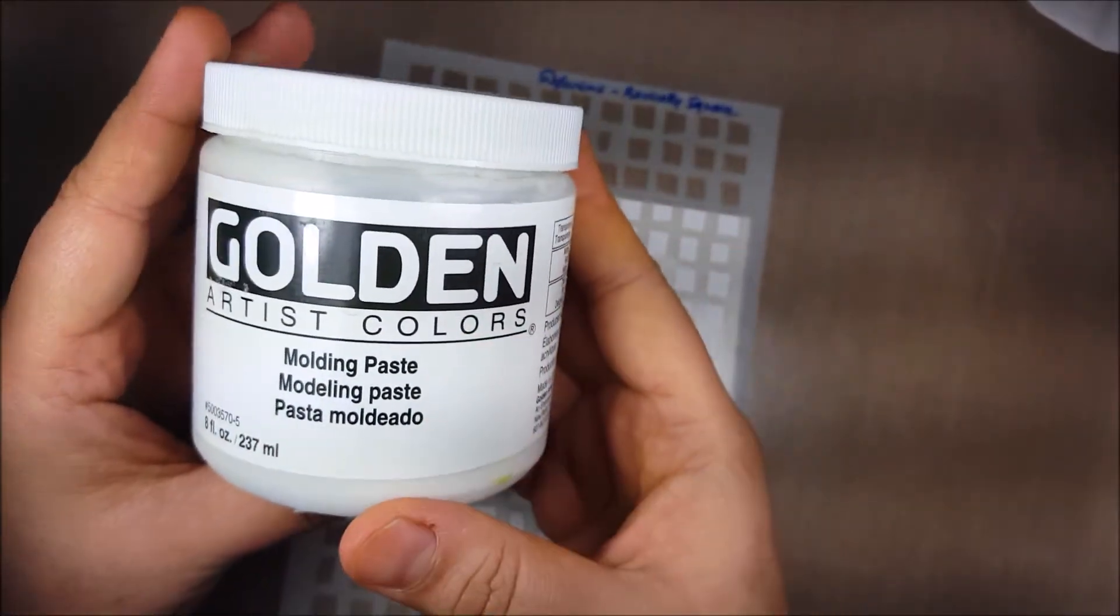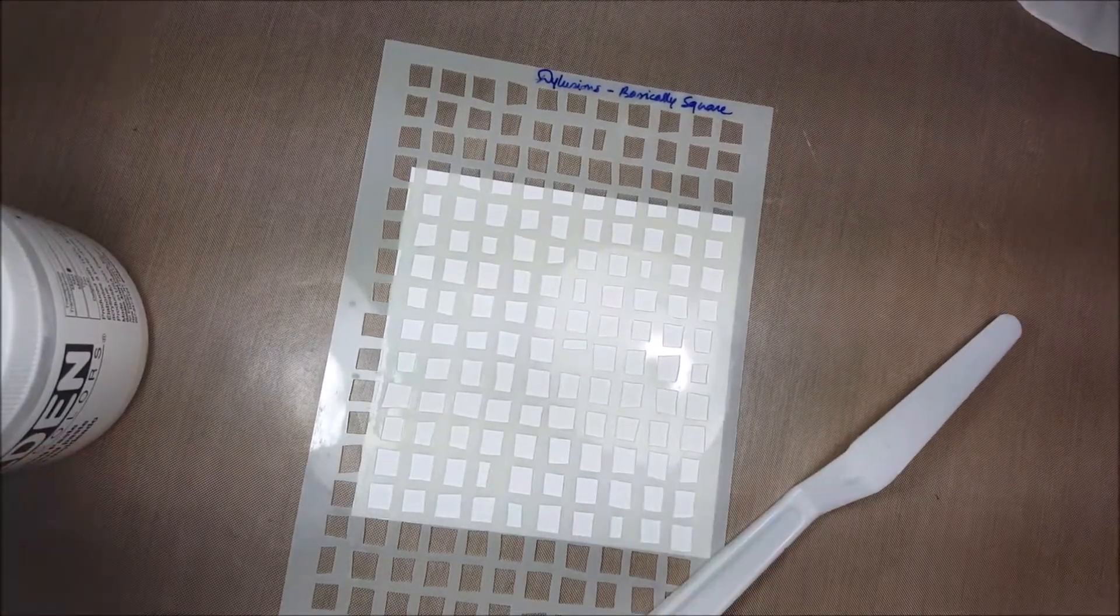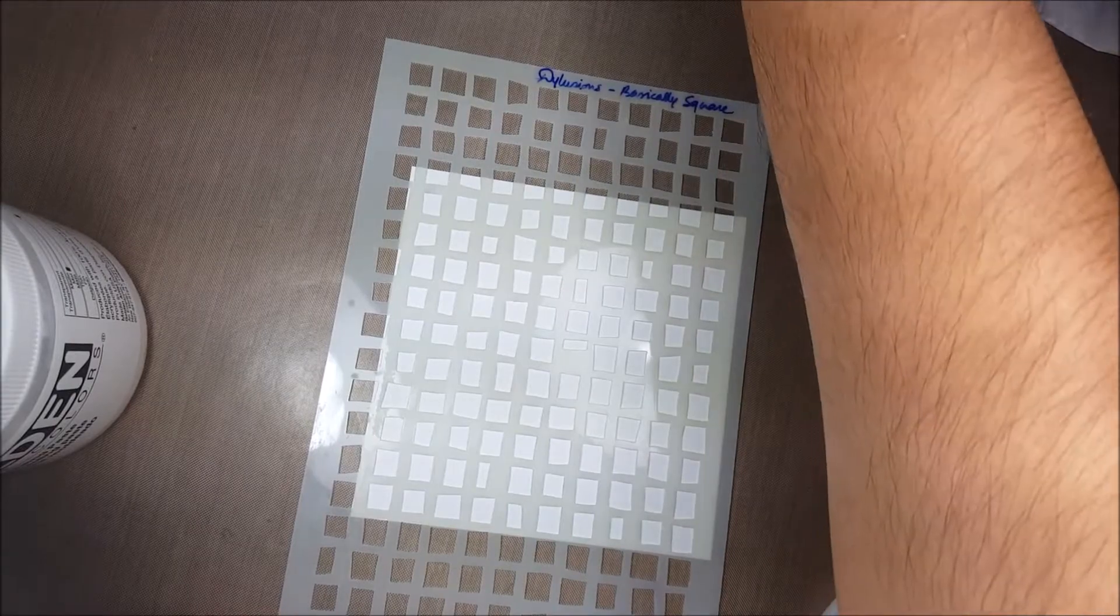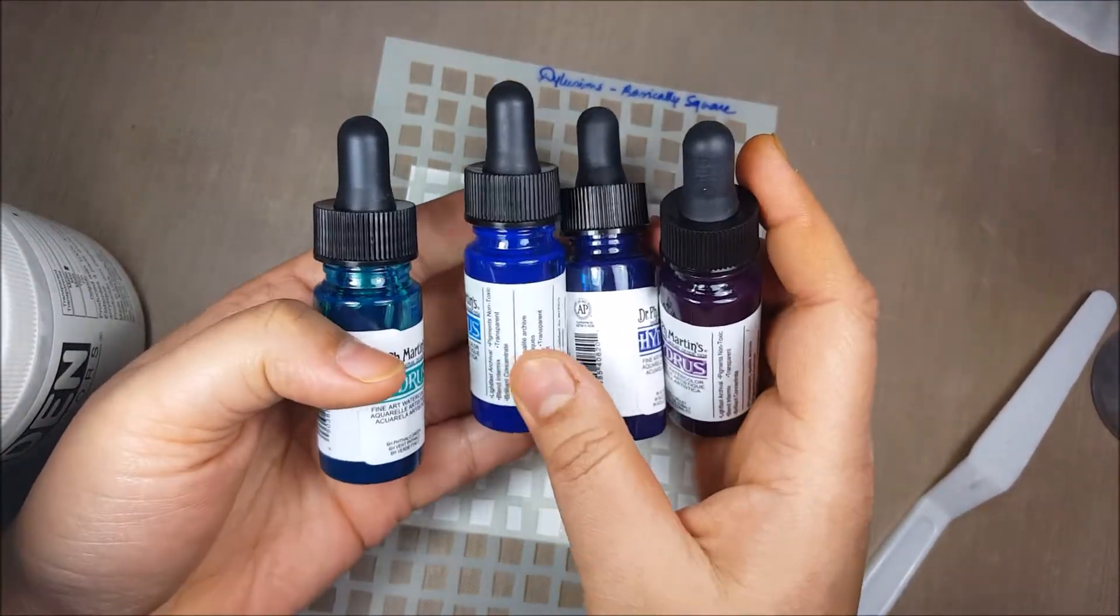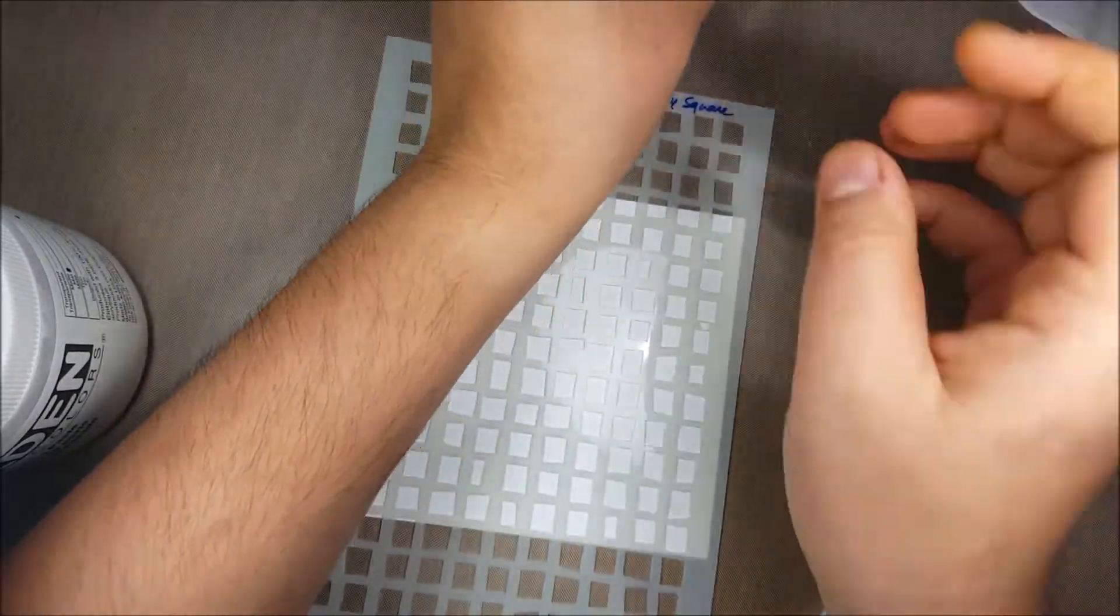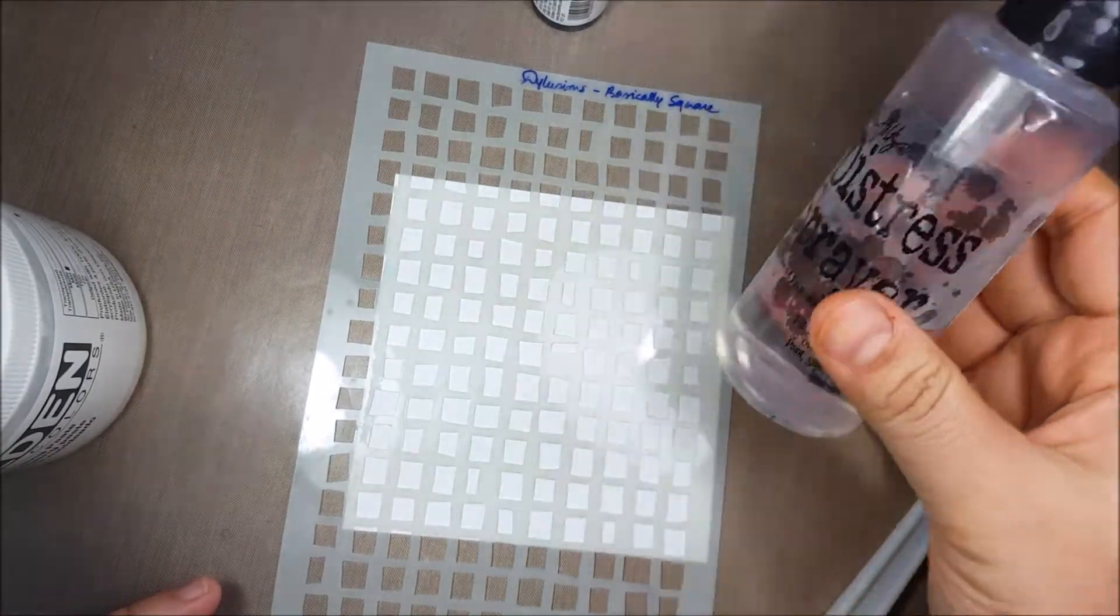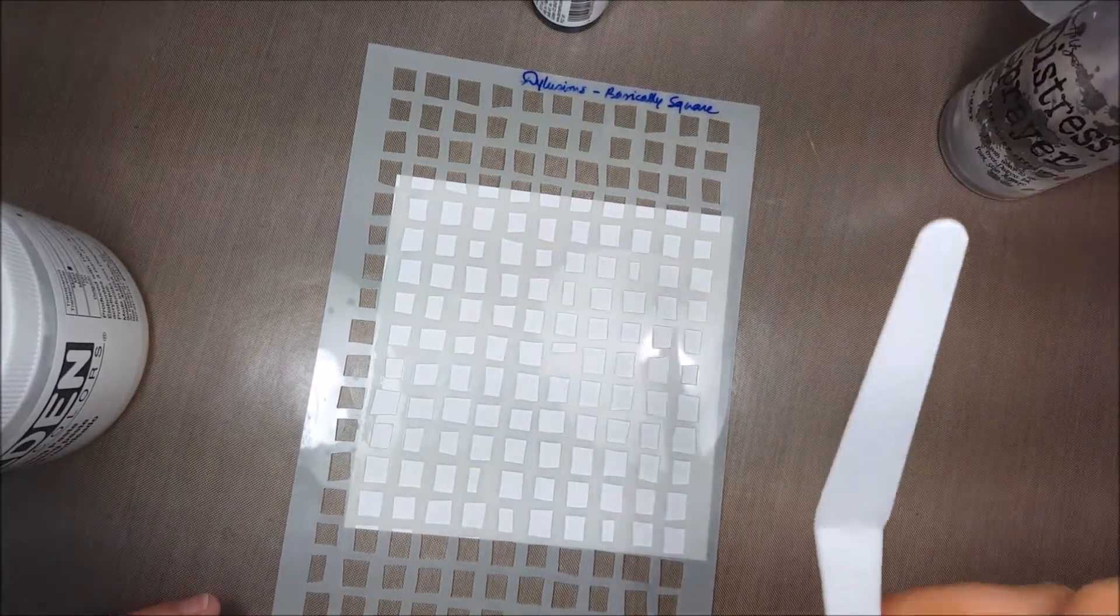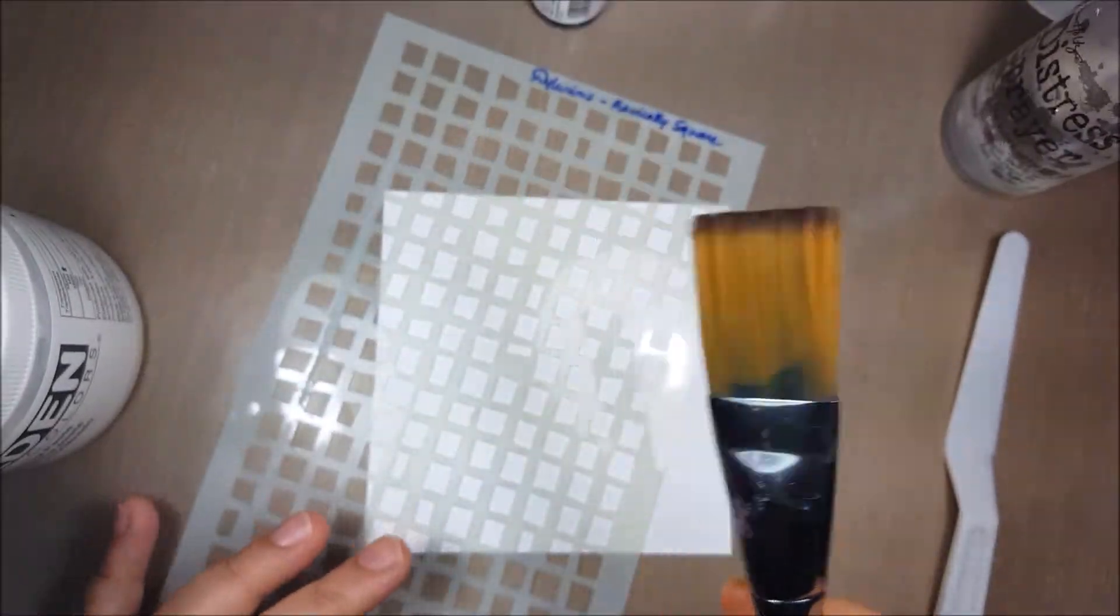Along with that, you'll need some kind of texture paste or modeling paste. I'm using Golden modeling paste. Then you'll need some colors to create the background. I'm using a couple of PH Martin colors. You'll also need some water through a distress sprayer, a palette knife, and a paintbrush.